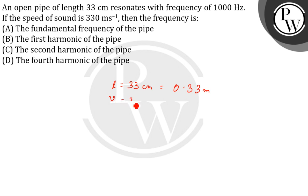The speed is given as 330 meters per second. The fundamental frequency for an open pipe is n = v/λ, which is v/2L = 330 divided by (2 × 0.33), which gives us 500 Hertz. This will be the first harmonic.